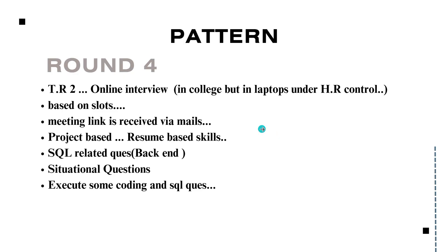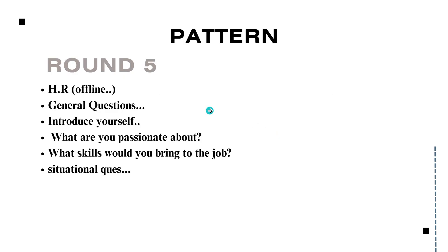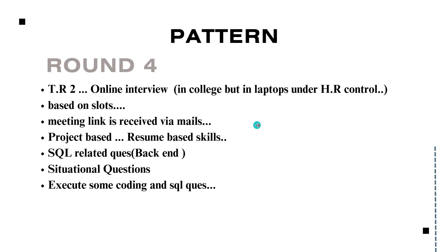This is round four. Those who qualified in rounds three and four are eligible for the HR round — round five. It is offline. HR asks general questions: introduce yourself, what are you passionate about, what skills would you bring to the job, and situational questions. This JMAN position is for 8.5 LPA, so be careful while answering. They ask you to share your screen on a platform where you can code and they run and execute it.